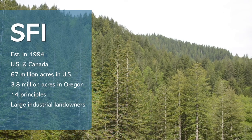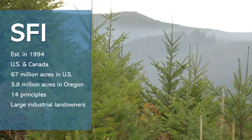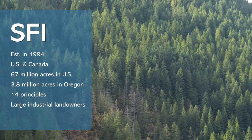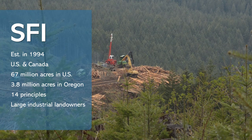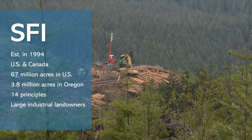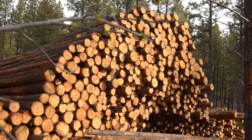The Sustainable Forestry Initiative, or SFI, was established in 1994 and primarily serves large industrial forest landowners in the U.S. and Canada. It currently certifies 67 million acres in the U.S., including 3.8 million acres in Oregon. SFI has 14 Sustainable Forestry Principles which guide development of standards used by independent contractors to certify forest land. SFI limits on timber harvest unit size, forest retention, and use of forest chemicals are based on state-level regulations and best management practices. SFI has a label that can be stamped on products such as lumber or on packaging, and SFI-certified wood is readily available in the marketplace.